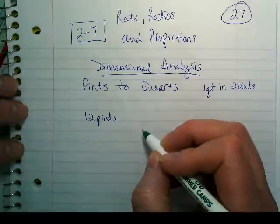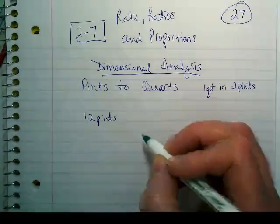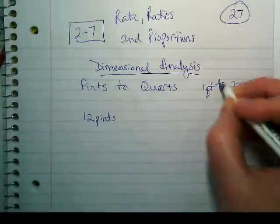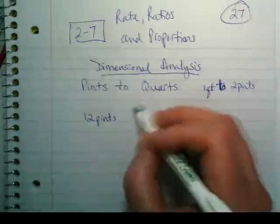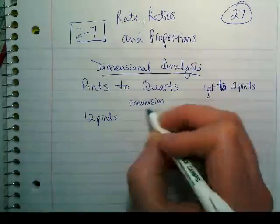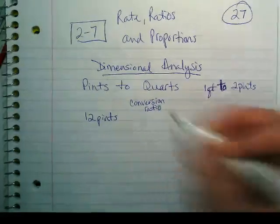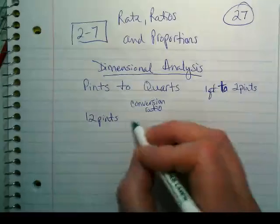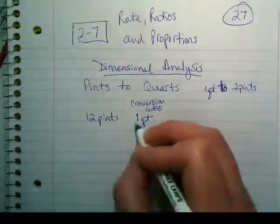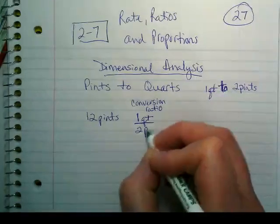One quart in two pints, or two pints in one quart. Let's change this to two, and it's a ratio. So when we're doing these, we write what's called a conversion ratio to make the conversion. And the conversion ratio here is going to be one quart over two pints.